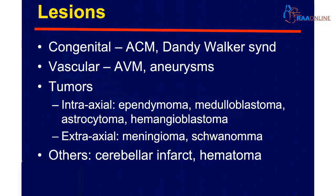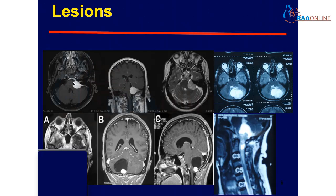Now what are the possible lesions in the posterior cranial fossa? It can be either congenital, like Arnold-Chiari malformation and Dandy-Walker syndrome, or vascular like arteriovenous malformation and aneurysm. Tumors can be intra-axial or extra-axial. Intra-axial include ependymoma, medulloblastoma, astrocytoma and hemangioblastoma. Extra-axial include meningioma and schwannoma. Other possibilities are cerebellar infarct and hematoma.